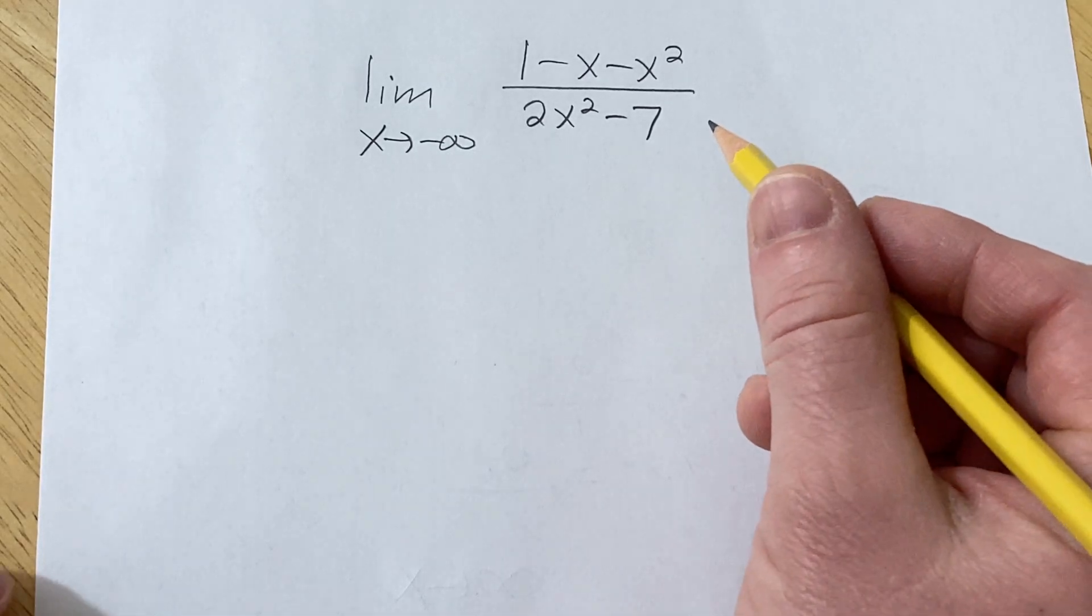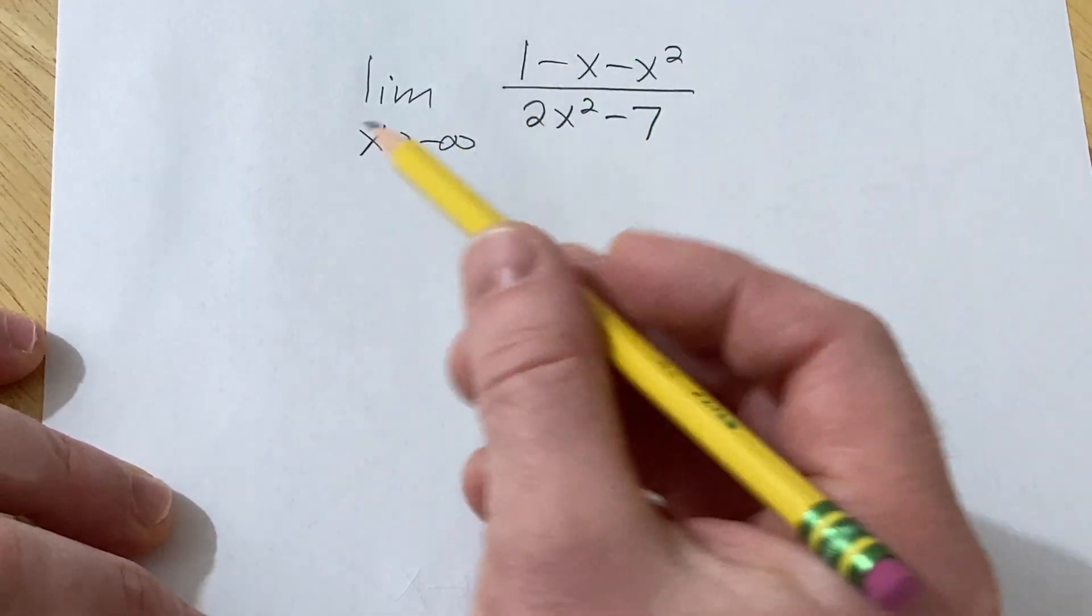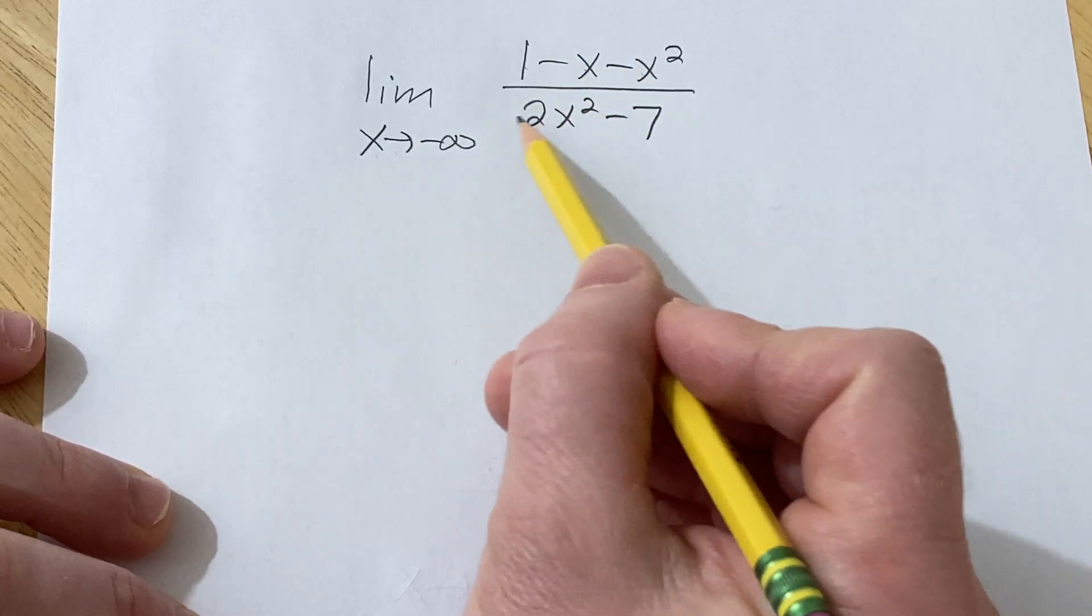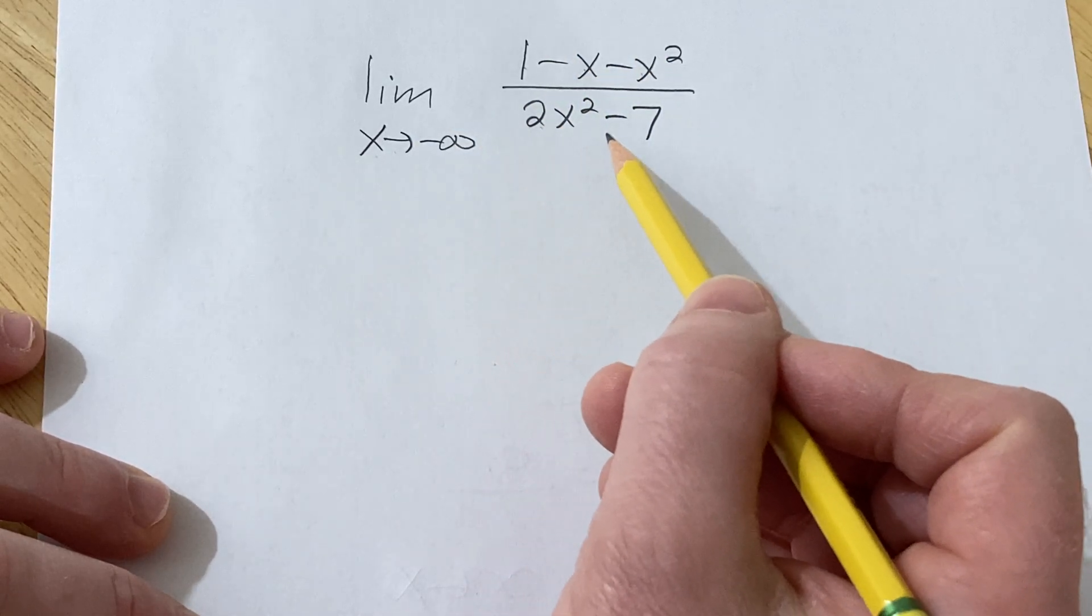Hi, in this video we're going to find this limit. We have the limit as x approaches negative infinity of 1 minus x minus x squared all over 2x squared minus 7.